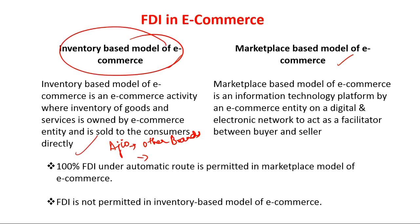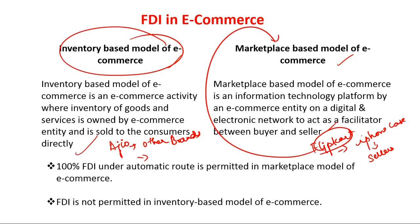In the marketplace-based model of e-commerce, the e-commerce entity acts as a platform for products being sold by different sellers. For example, on Flipkart, an iPhone case can be sold by different sellers registered with the platform, and pricing of the product varies between different sellers. Flipkart operates as a marketplace-based model — acting as a convergence point for different sellers. The technological proficiency of these e-commerce entities helps products reach a wider audience, which is one important positive of the marketplace-based model.